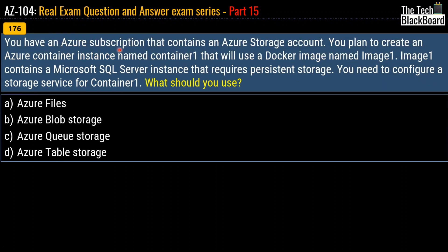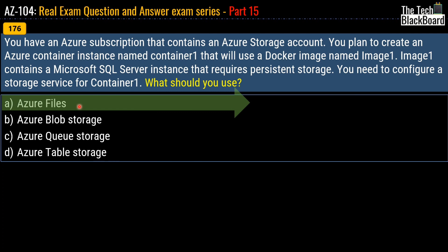Question 176: You have an Azure subscription containing an Azure storage account. You plan to create an Azure container instance named Container1 that will use a Docker image named Image1. Image1 contains a Microsoft SQL Server instance that requires persistent storage. You need to configure a storage service for Container1. What should you use? Options: Azure Files, Azure Blob Storage, Azure Queue Storage, or Azure Table Storage. The correct answer is option A, Azure Files.